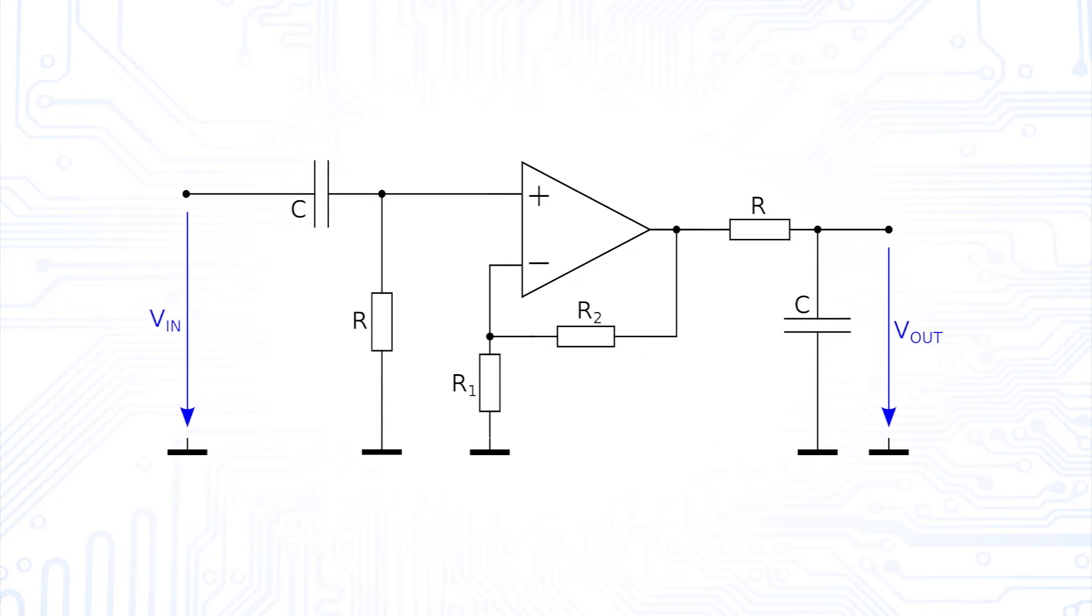At last, we want to discuss the active bandpass filter. In a very simple active bandpass filter, the operational amplifier is connected between the two RC elements. This means that the high-pass RC element is connected to the input of the amplifier stage and the low-pass RC element is connected to the output of the amplifier stage.